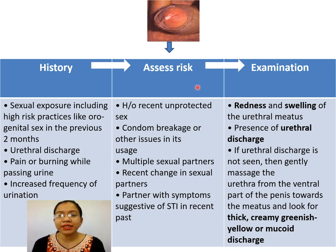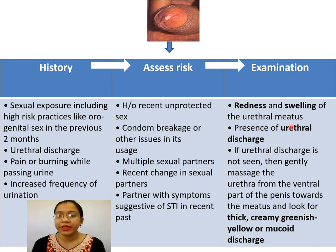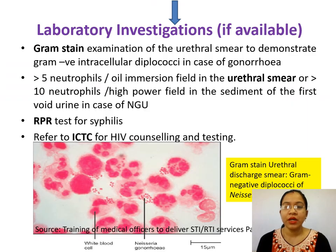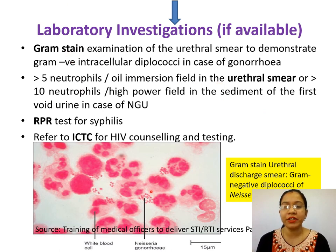After taking history and assessing risk, we examine the patient. Look for redness and swelling of the urethral meatus and whether discharge is present. If urethral discharge is not seen, gently massage the urethra from the ventral part of the penis towards the meatus and look for thick, creamy, greenish, yellow, or mucoid discharge. If lab investigations are available, go for Gram stain—finding Gram-negative intracellular diplococci suggests gonorrhea (Neisseria gonorrhoeae).